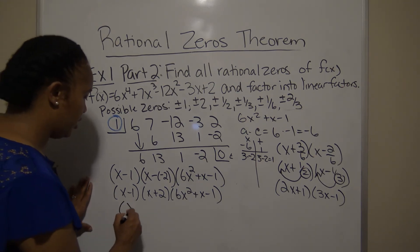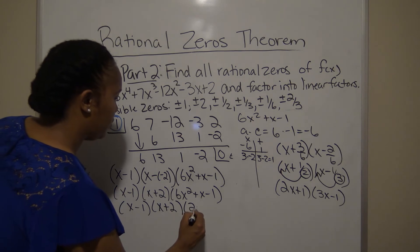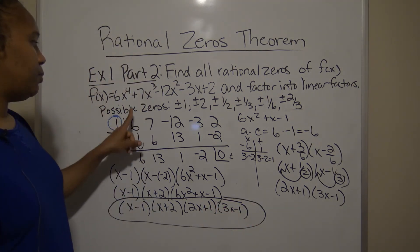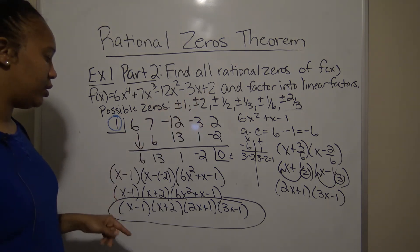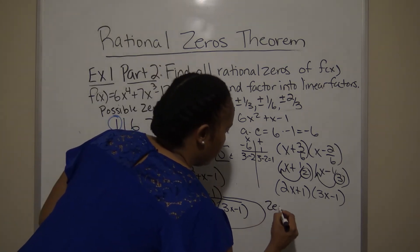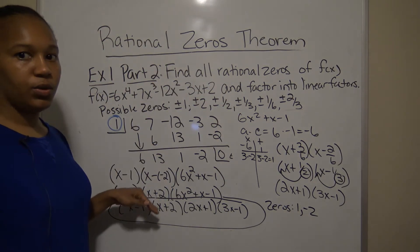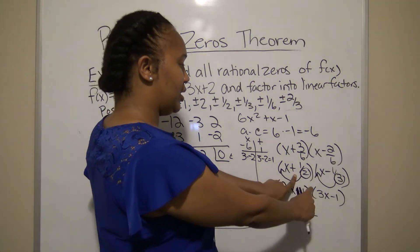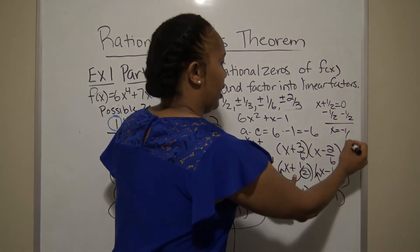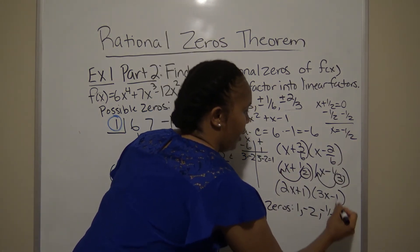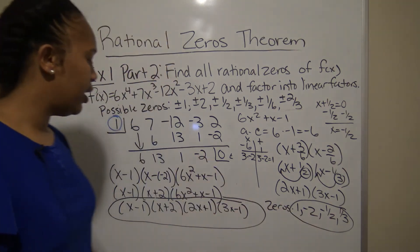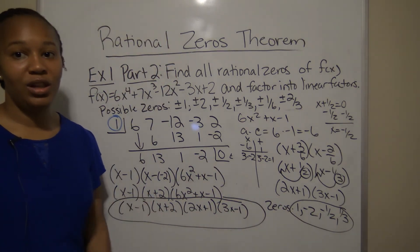So the full factored form is (x - 1)(x + 2)(2x + 1)(3x - 1). The four zeros are: x = 1, x = -2, x = -1/2 (from 2x + 1 = 0), and x = 1/3 (from 3x - 1 = 0). That's how you factor a polynomial completely into linear factors.